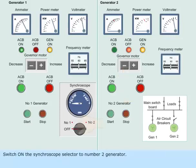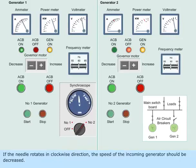Switch on the synchronoscope selector to number 2 generator. If the needle rotates in clockwise direction, the speed of the incoming generator should be decreased. If the needle rotates in anti-clockwise direction, the speed of the incoming generator should be increased.